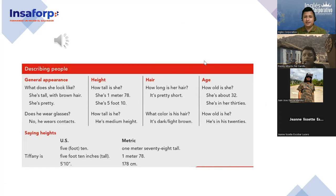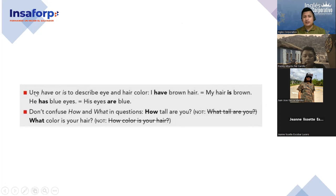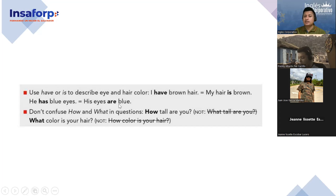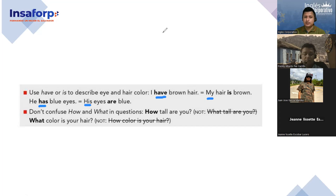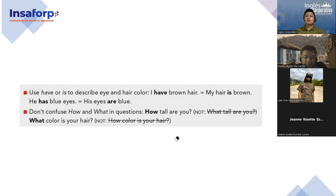Another thing — use 'have' or 'is' to describe. For hair color: 'I have brown hair' or 'My hair is brown' — you can use both. 'He has blue eyes' or 'His eyes are blue.' Also, don't confuse 'how' and 'what' in questions — 'How tall are you?' and 'What color is your hair?' Be careful with pronunciation and how you use these forms.